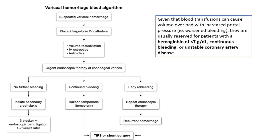When variceal hemorrhage is suspected, place two large-bore IV catheters and begin volume resuscitation, IV octreotide, and antibiotics, then perform urgent endoscopic therapy of esophageal varices. If there's no further bleeding, initiate secondary prophylaxis with a non-selective beta-blocker and endoscopic band ligation in one to two weeks.